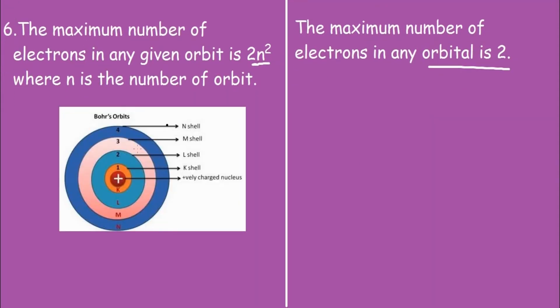So this is the pictorial representation of an orbit, it is also known as Bohr's orbit. Now the orbits are represented as K, L, M, N, and so on. And this is the nucleus.